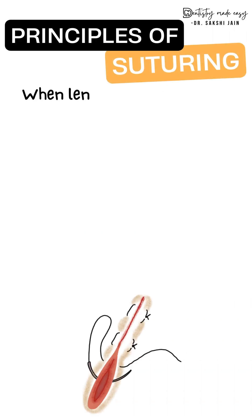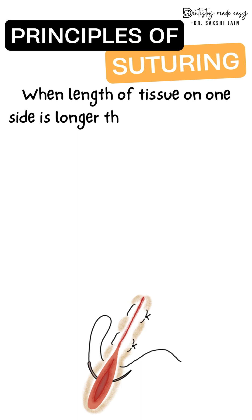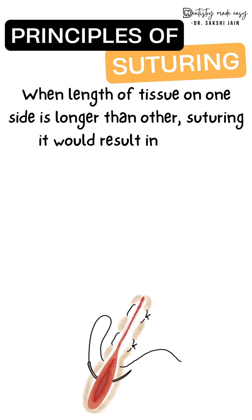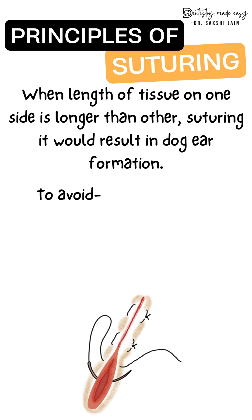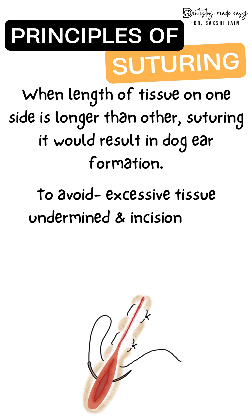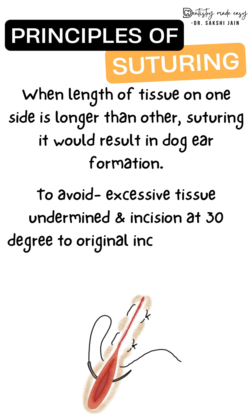The next principle: whenever the length of tissue is longer on one side and shorter on the other, there are chances of dog ear formation. To avoid this, the excessive tissue should be undermined and an incision is placed at 30 degrees to the original incision.